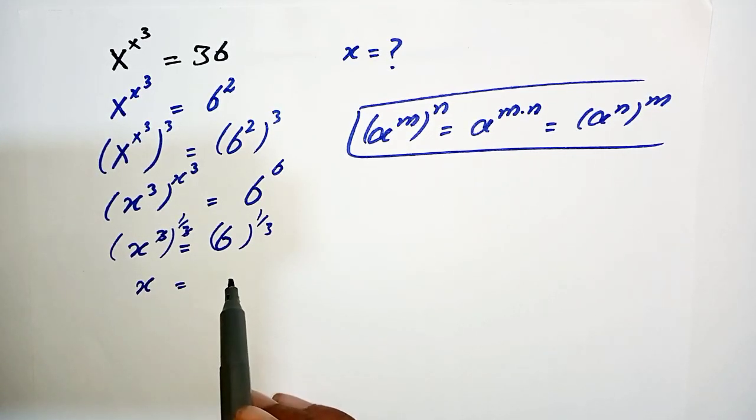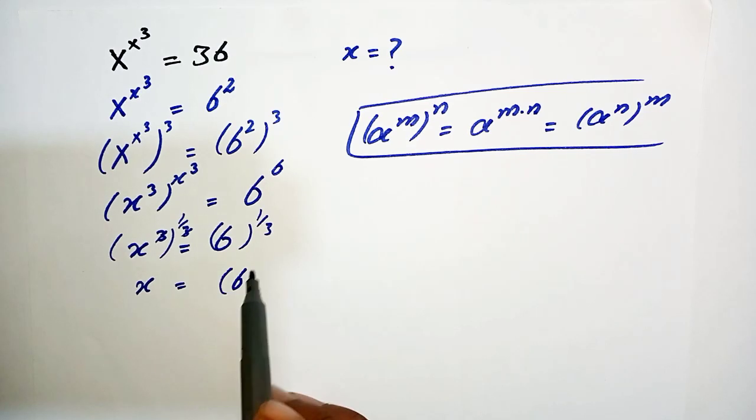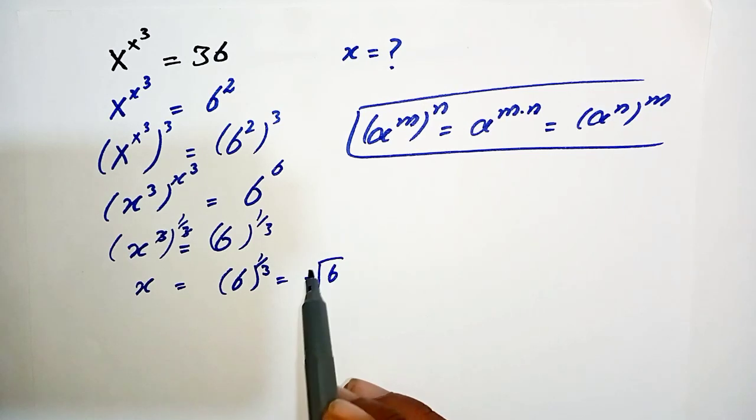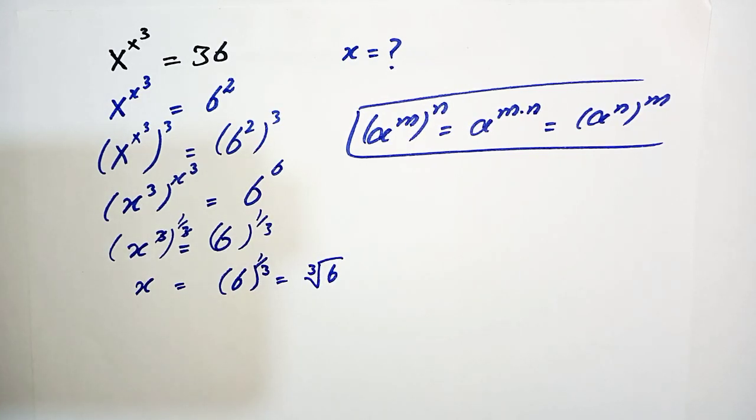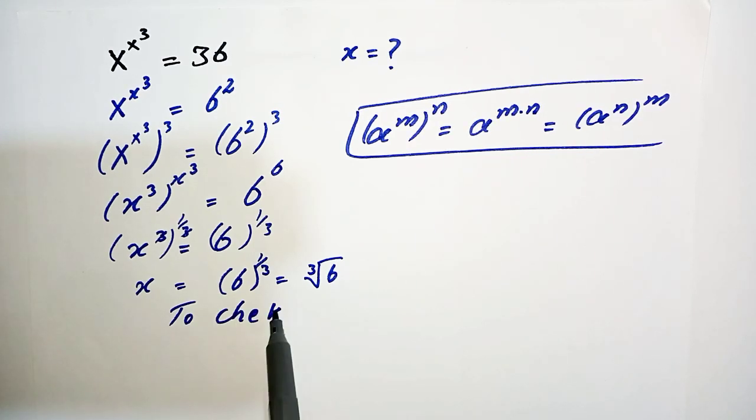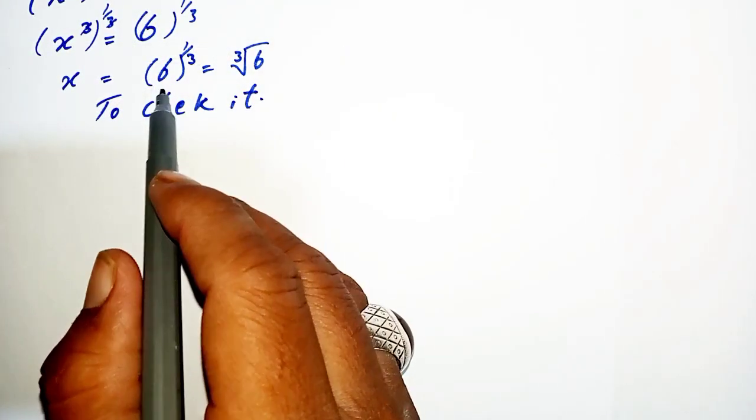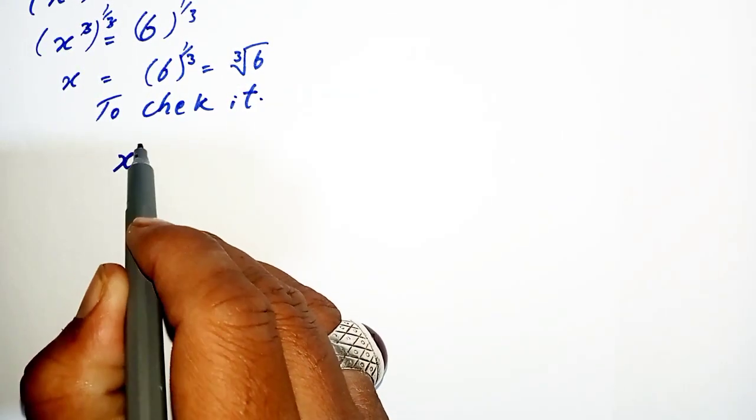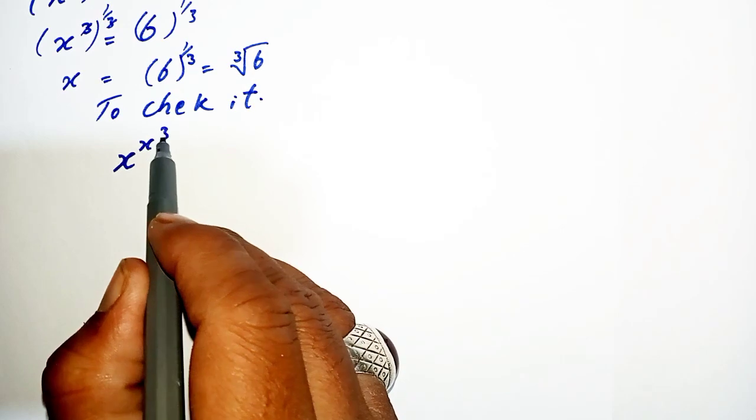It becomes x, and this becomes 6^(1/3), or ³√6. This is the value of x. We have to check the value of x—is it true or false? To check it, we put this value of x in the question.